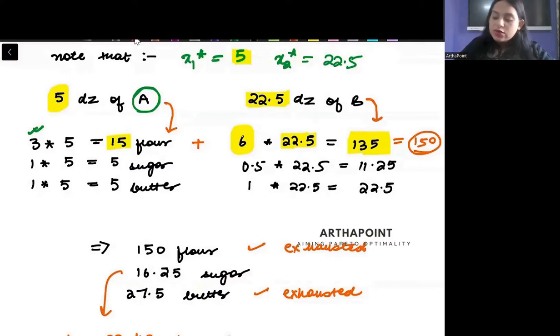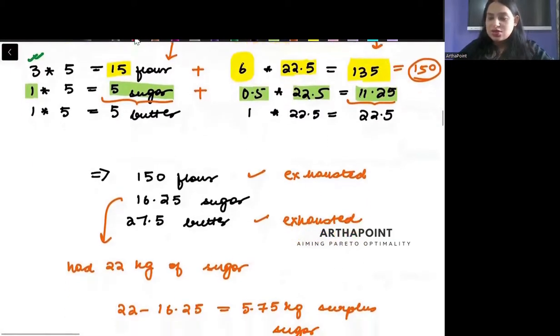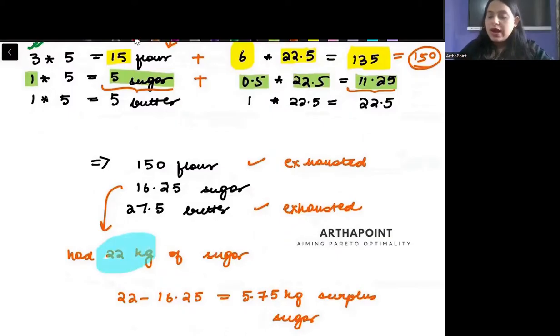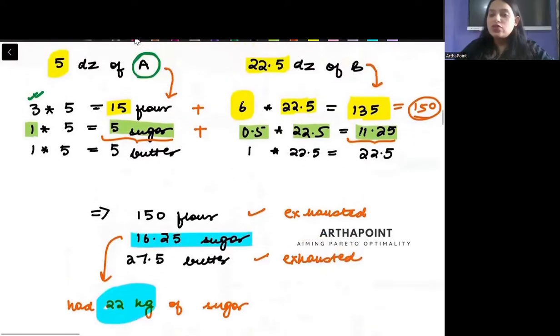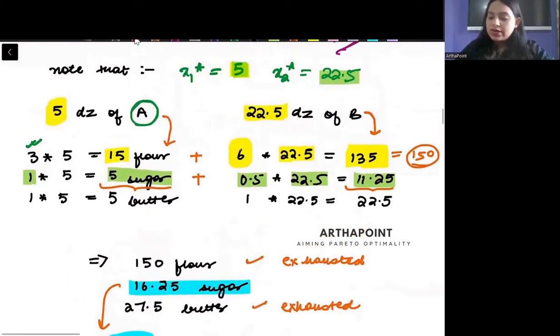Each unit of cake A requires 1 kg of sugar. I am producing 5 units of cake A, so it will require 5 kg of sugar. Each unit of cake B requires 0.5 kg of sugar. I am producing 22.5 units of cake B, so it will use 11.25 kg of sugar. So you can see that 5 plus 11.25, this is not completely exhausted. I have 22 kg of sugar. I am only using 16.25 kg of sugar, so this is not completely exhausted.